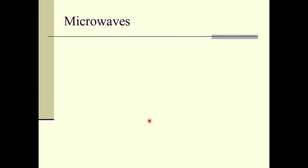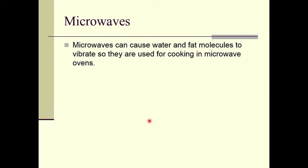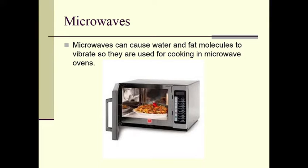Let us now study the applications of microwaves. Microwaves can cause water and fat molecules to vibrate, so they are used for cooking in microwave ovens. In microwave ovens, the microwave source causes water molecules inside the food to vibrate, producing a large amount of heat that cooks the food. This is a typical microwave oven used in households.